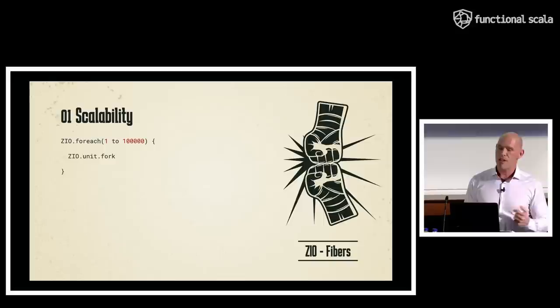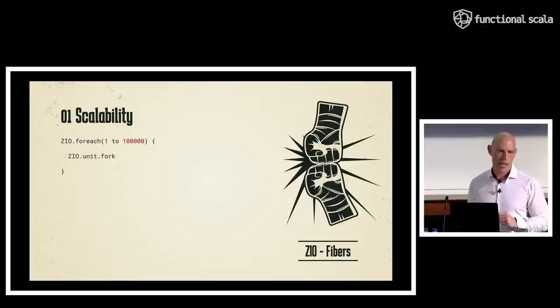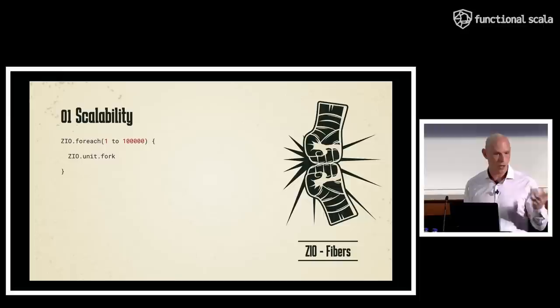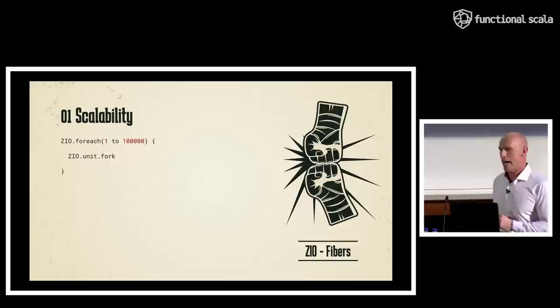This led to things like ZIO, Monix, and Cats Effect, where we have something basically like a virtual thread — ZIO calls them fibers, but they're like a thread in every way. You can create huge numbers of these things on a single machine: forget about 10,000, you can create 100,000 or even a million of them. Because they're so efficient and the operating system is not involved in context switching, we achieve the scalability necessary to power modern-day systems.